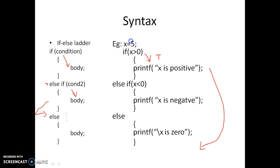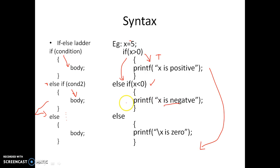If the value of x is minus 5, we first check whether x is greater than 0 — that is false — so it moves to the next else-if and checks whether x is less than 0. Since x is minus 5 that condition is true, so it prints 'x is negative' and exits the if construct.